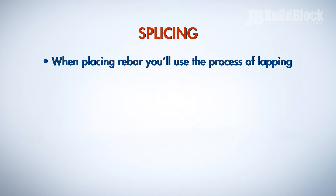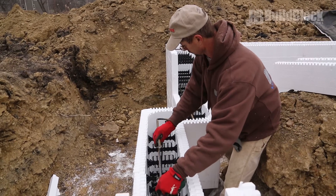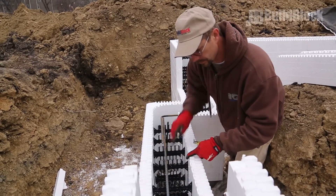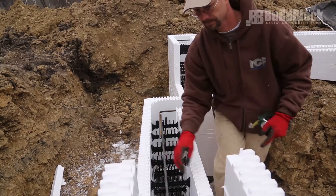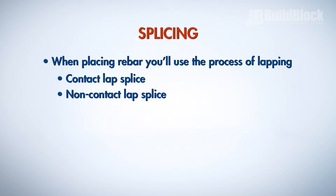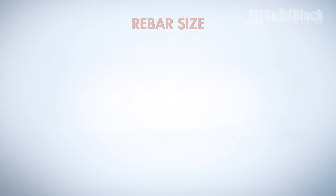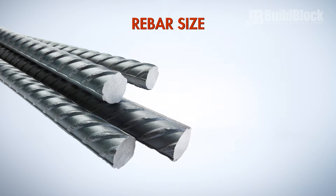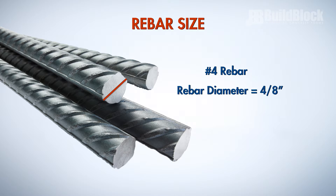When placing rebar, you'll use the process of lapping. A lap is when two pieces of rebar are overlapped to create a continuous line of rebar. There are two types of lap splices: contact and non-contact. Rebar comes in different thicknesses based on the diameter in number of eighths of an inch. A number four rebar, for example, is four one-eighths of an inch, or one-half inch.